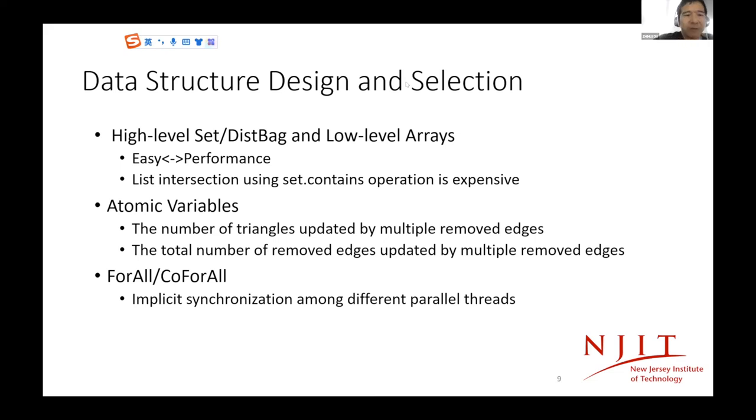At the same time, we use Chapel's atomic variables to handle the write risk problem. For example, we need to update the total number of triangles from different edges. The total for an edge should be updated by many different remote edges at the same time. We use atomic variables to avoid the write-write risk. We also use for-all and co-for-all to parallelize the search. Because they are implicit synchronized measures, it is very easy for us. After the for-all and co-for-all end, we know that all the threads are synchronized.